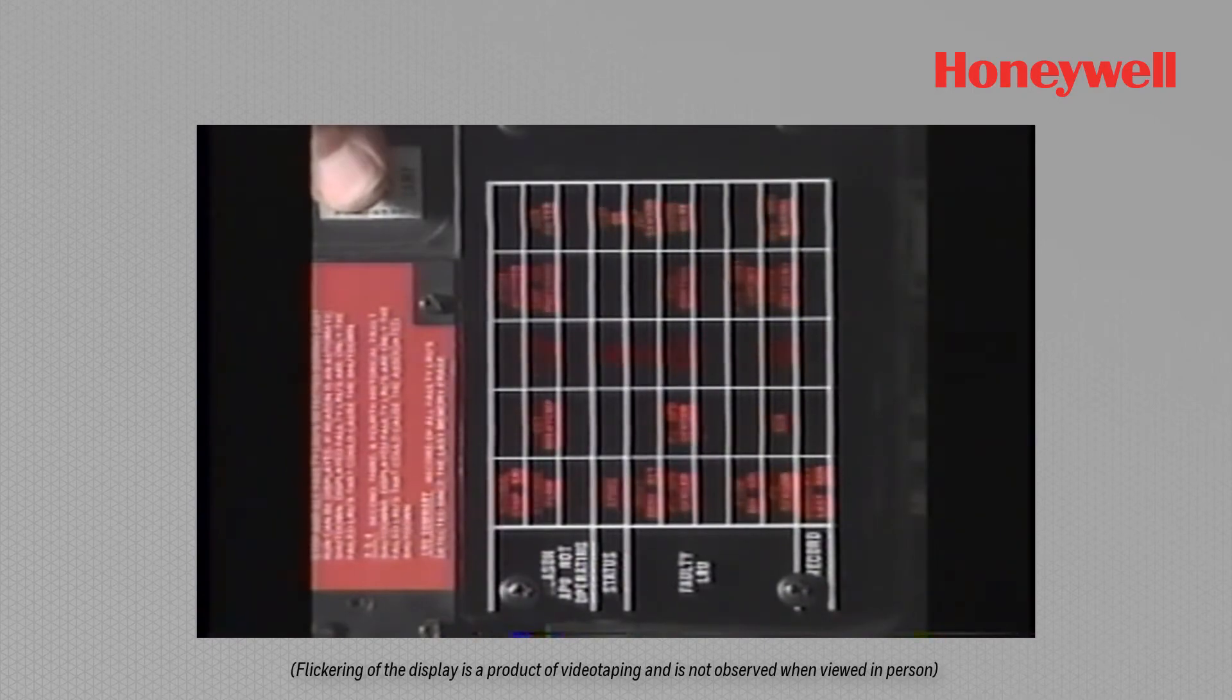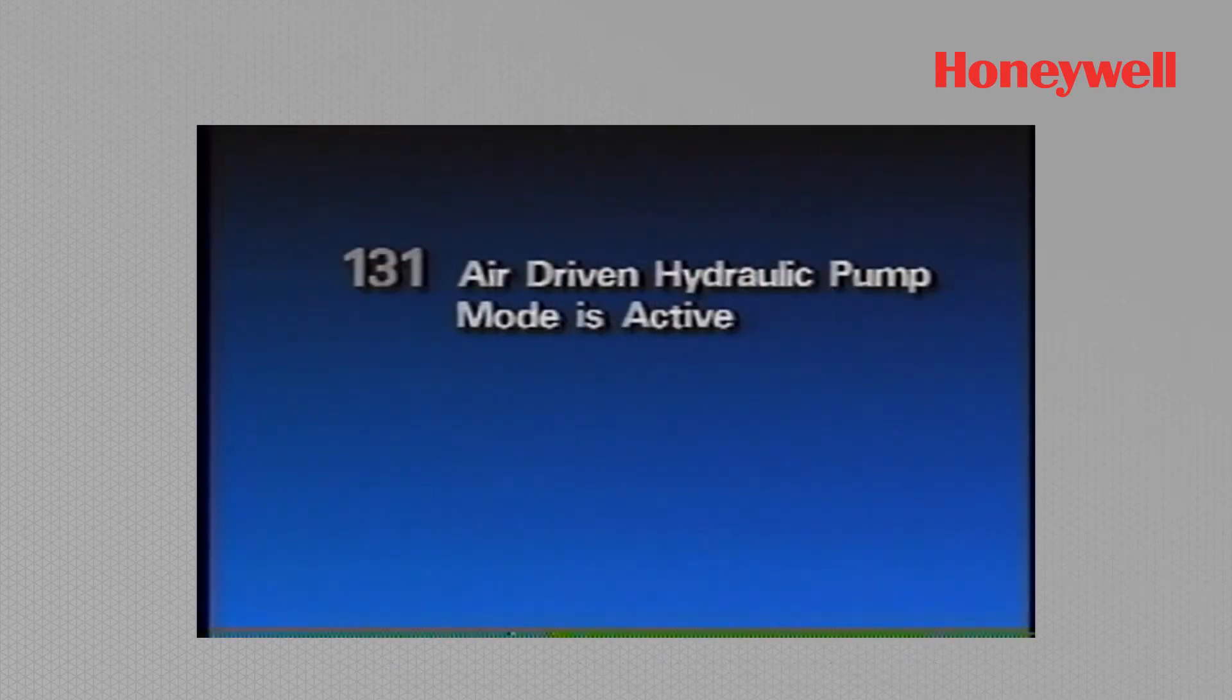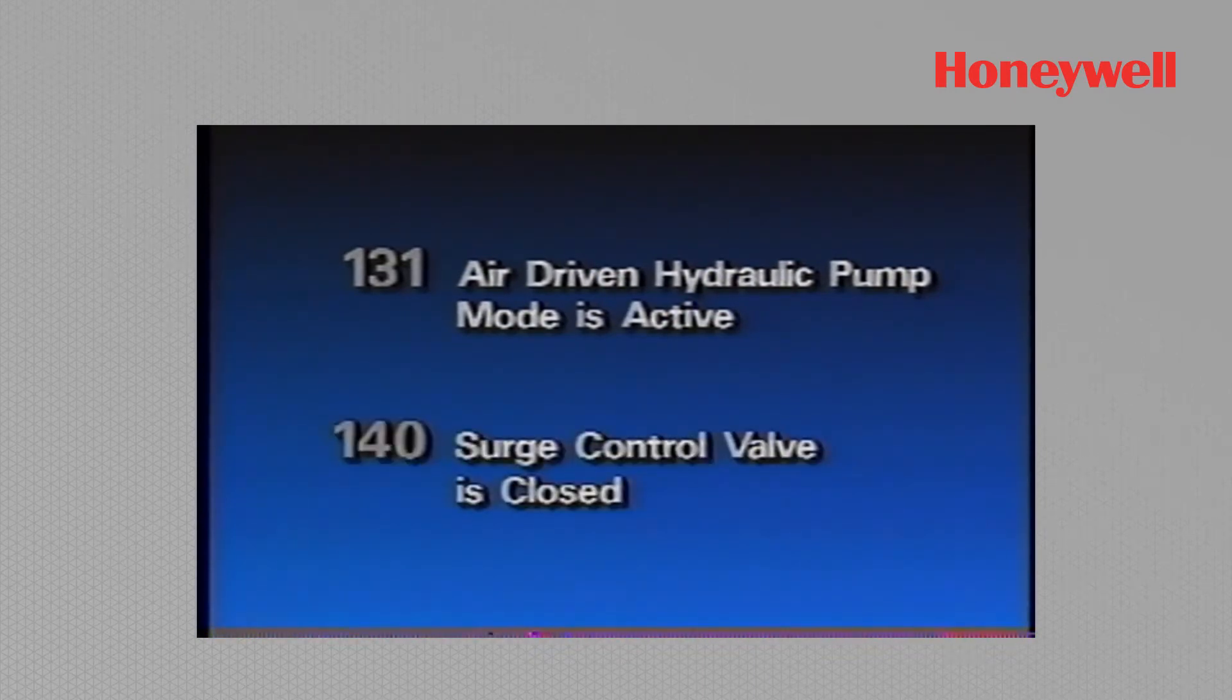For instance, numbers 131 and 140. 131 implies that the air-driven hydraulics pump mode is active, and 140 implies that the surge control valve is closed. This should tell you that pressure is available for the aircraft system.